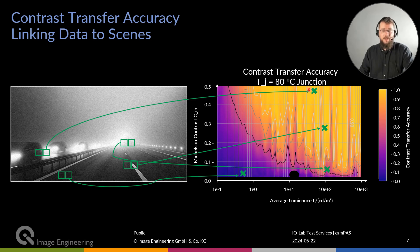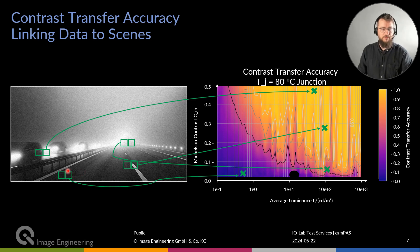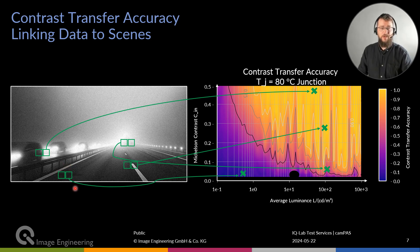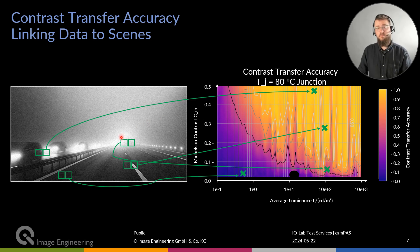Now we can also look at situations with a low contrast transfer accuracy. In one example, there is a pothole on the right side of the road — one image square shows the pothole and another does not. This is a low-light situation with a really low contrast, and we can see that the camera will not be able to transfer this contrast accurately. This is a typical situation where we can link data to scenes and link scenes back to the data.